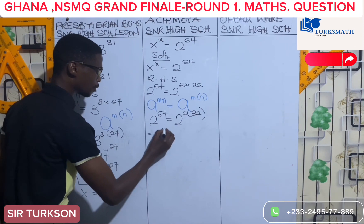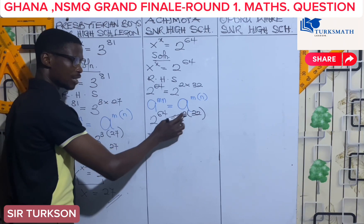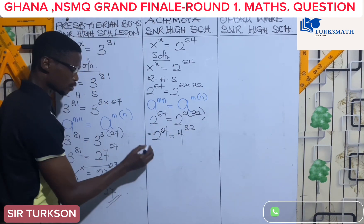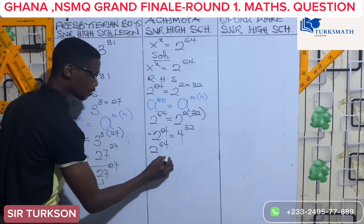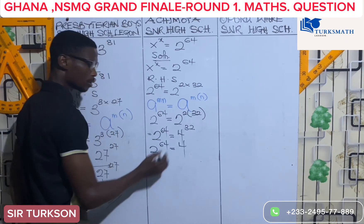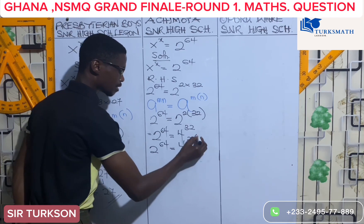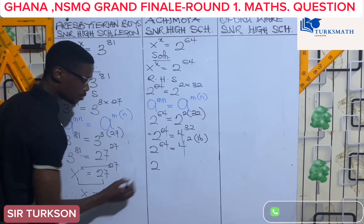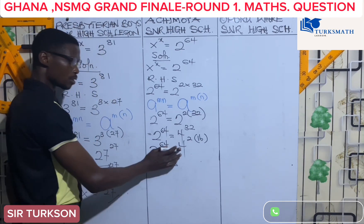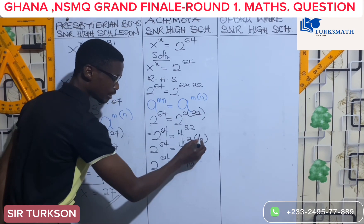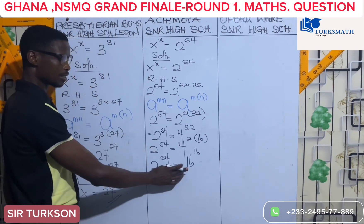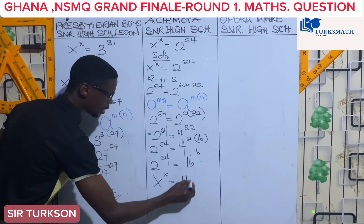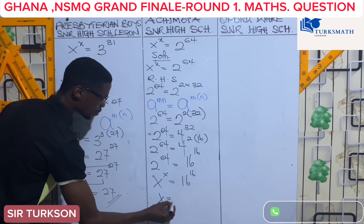So 2 exponent 64 equals 2 exponent (2 × 32), and 2 exponent 2 gives us 4, exponent 32. We break this down further: 4 exponent (2 × 16), since 2 times 16 gives us 32. Rewriting, 2 exponent 64 equals 4 exponent 2, which equals 16, giving us 16 exponent 16. The base and exponent are both 16, so x exponent x equals 16 exponent 16. Therefore, x is equal to 16.